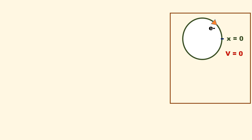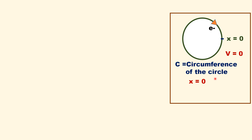Let us consider an electron moving in a circular path in a ring. Let us consider this position x equal to 0 as the origin. The electron travels one complete circle, that is c equal to circumference of the circle. Therefore x equal to 0 and x equal to c, x equal to 2c, etc.